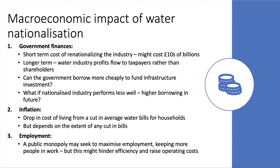In the longer term the impact on government finances is more uncertain. Will the industry be profitable, and would those profits then flow to taxpayers rather than shareholders? The industry requires huge infrastructure spending — can the government borrow more cheaply to fund water infrastructure compared to private sector companies? What happens if the industry performs less well under state ownership, increasing borrowing costs in the future? A big macro aspect is to think about the consequences for government finances both in the near and medium term.